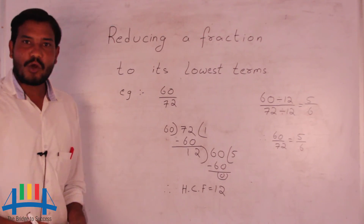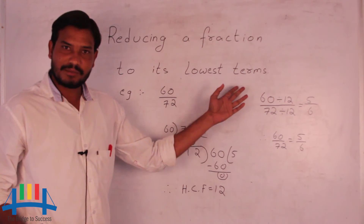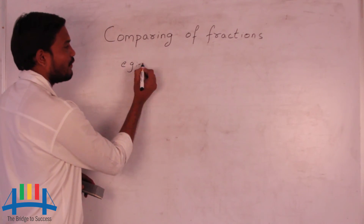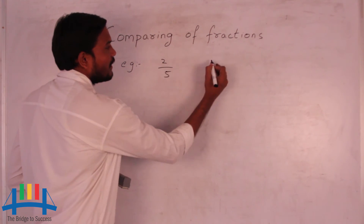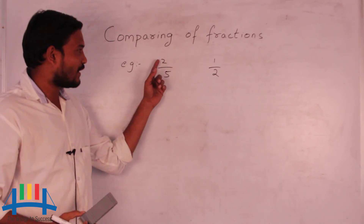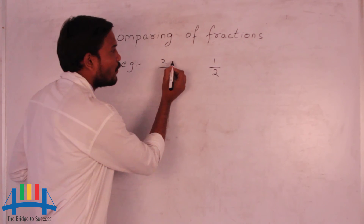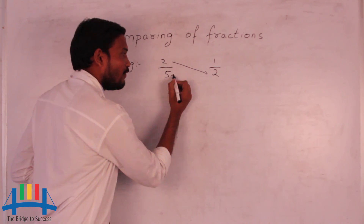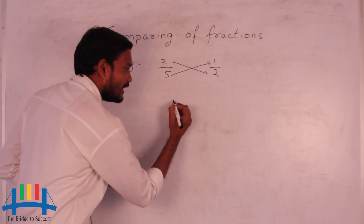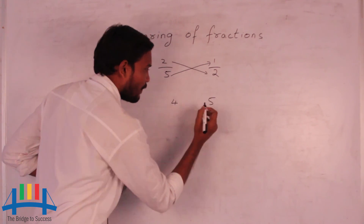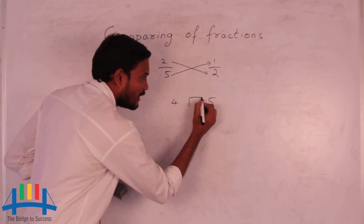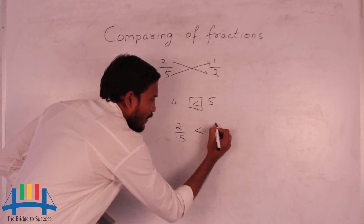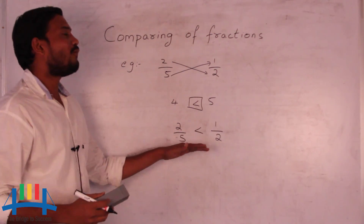This is the process of how to reduce a fraction to its lowest terms. Now I will explain how to compare two different fractions. I will consider two fractions: 2 by 5 and 1 by 2. To compare these fractions, first we should do cross multiplication. We multiply 2 by the denominator of the other fraction, giving 2 times 2 equals 4, and 5 times 1 equals 5. Since 4 is less than 5, we conclude that 2 by 5 is less than 1 by 2. This is how to compare two different fractions.